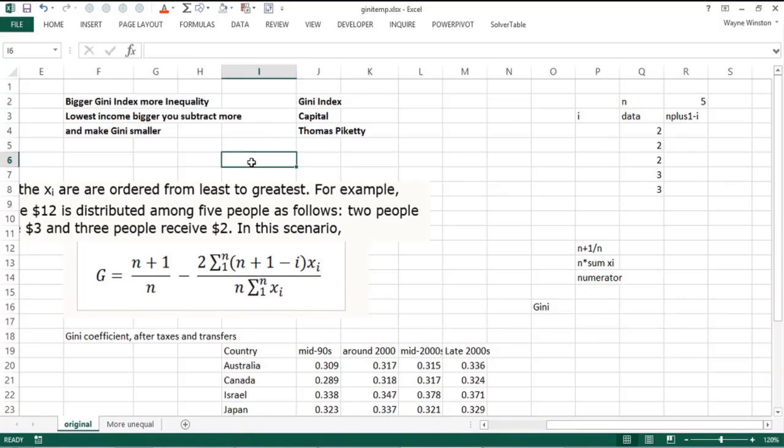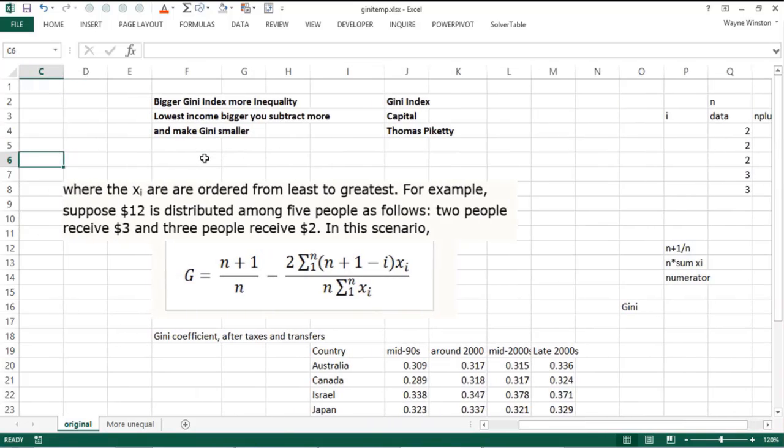There is a measure of economic inequality economists often use called the Gini index. Basically how does this work? You take the income of everybody, order them from smallest to largest, and then if there's n people, you take n plus one divided by n, and then you subtract two times the summation as i goes from 1 to n of n plus one minus i times the person's income, divided by the number of people times the sum of their total income.